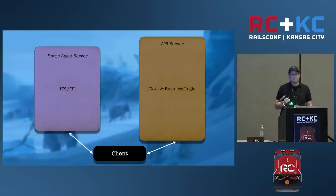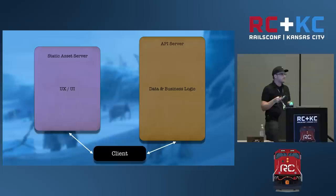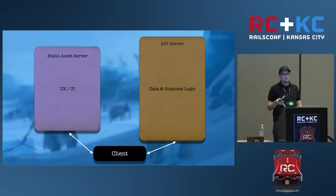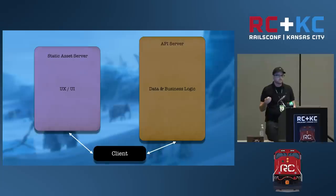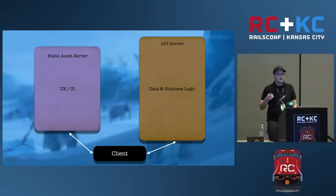This is extremely important. Frontend and backend require different head spaces. Even for those of us who go back and forth between the two, there is definitely a context switch involved. This now enables us to have two separate teams, each having different expertise working on what they do best. The frontend team working on developing amazing user experiences, and the backend team focusing on reliability, scalability, data, and API best practices.